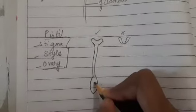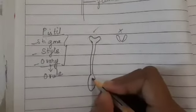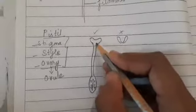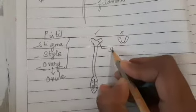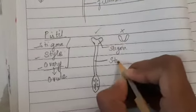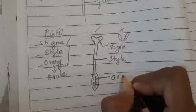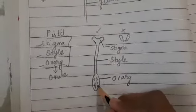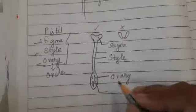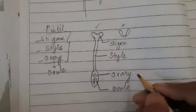What will you find in the ovary? In the ovary, small bead-like structures called ovules are present. You draw a line and on both sides draw small circles. That bead-like structure called ovule is present inside the ovary.